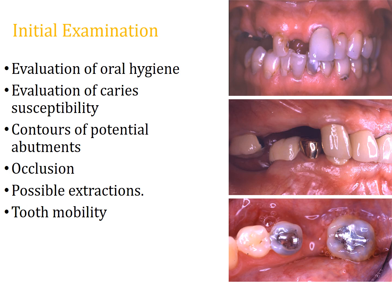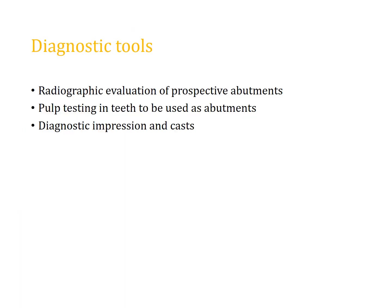Initial examination involves evaluating oral hygiene, caries susceptibility, the potential of abutment teeth, and the type of occlusion — whether it is Class 1, Class 2, or Class 3; crossbite or deep bite; open bite. All of this needs to be considered as it determines the difficulty of treatment. Any tooth mobility must also be noted.